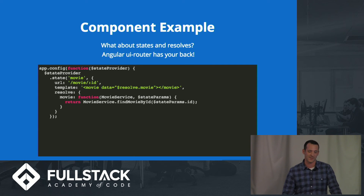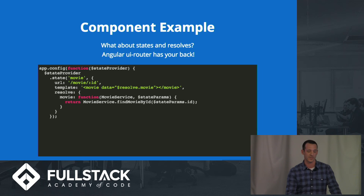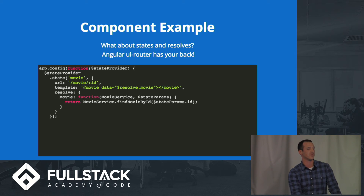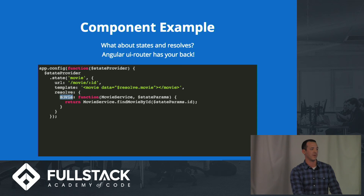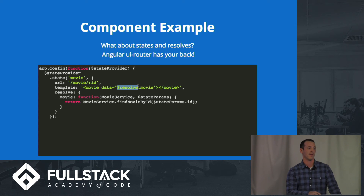One important part to note is when you're using states or want to use a resolve. Angular UI Router, which is what I use, supports this. For this state — movie — we declare a URL of /movie and then pass through an ID. The template here is actually the movie component, or you can think of it like an element directive. Using this custom movie HTML element, it'll automatically find the component and its templateUrl. A normal resolve on this state returns a promise from our movie service's findMovieById using the ID from that state URL. By using $resolve, you resolve that promise right there in the component.